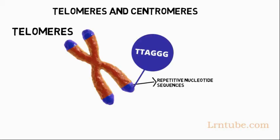That is, thymine, thymine, adenine, guanine, guanine — at the end of the DNA, forming a telomere. Some of the sequences are lost in each round of replication and can be replaced by the enzyme telomerase.